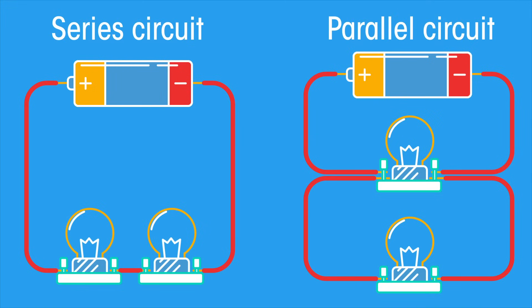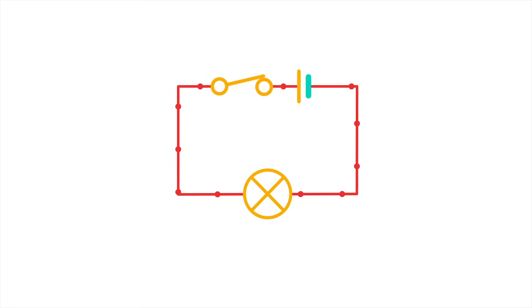Voltage is a measure of the electrical push that the battery gives to the electrons. It's a measure of the energy in joules given to each packet of electrons (coulombs).